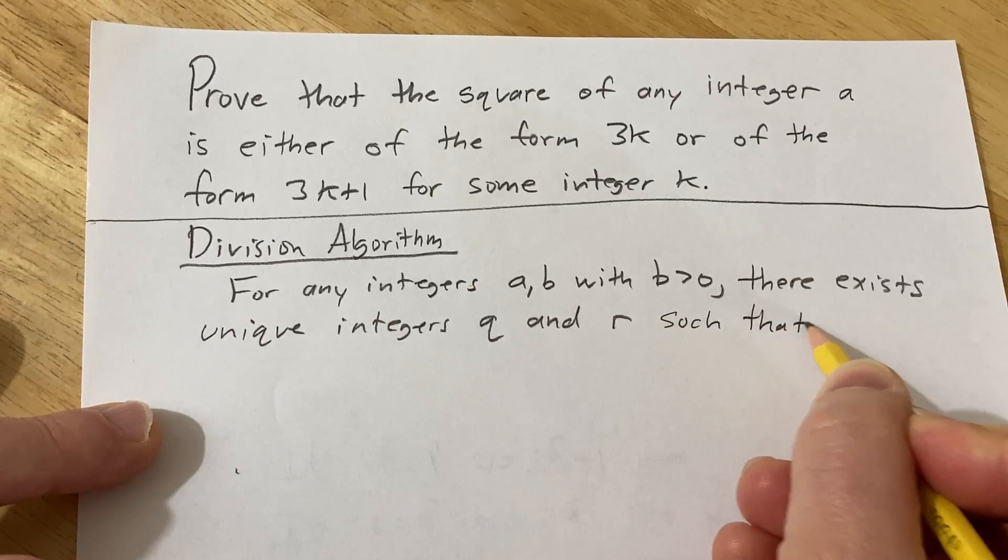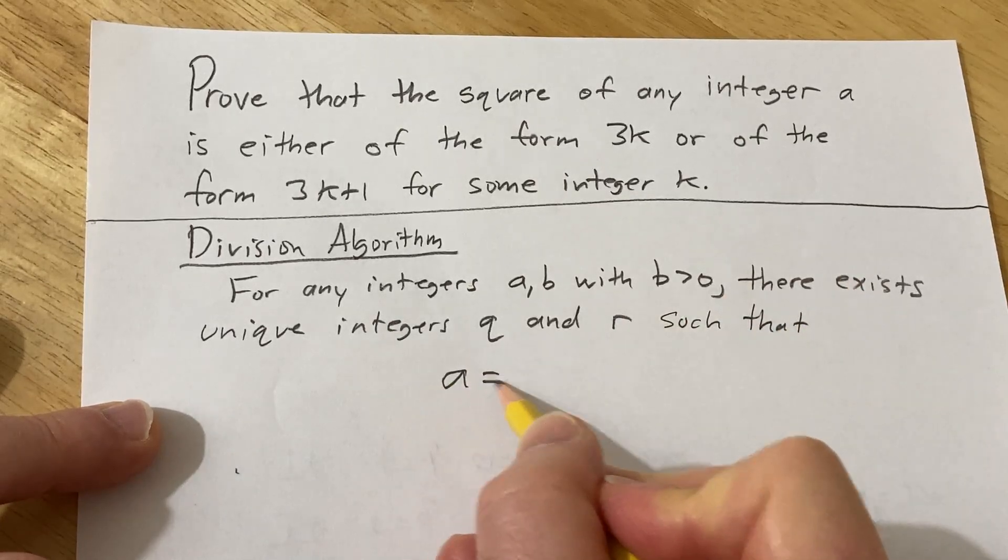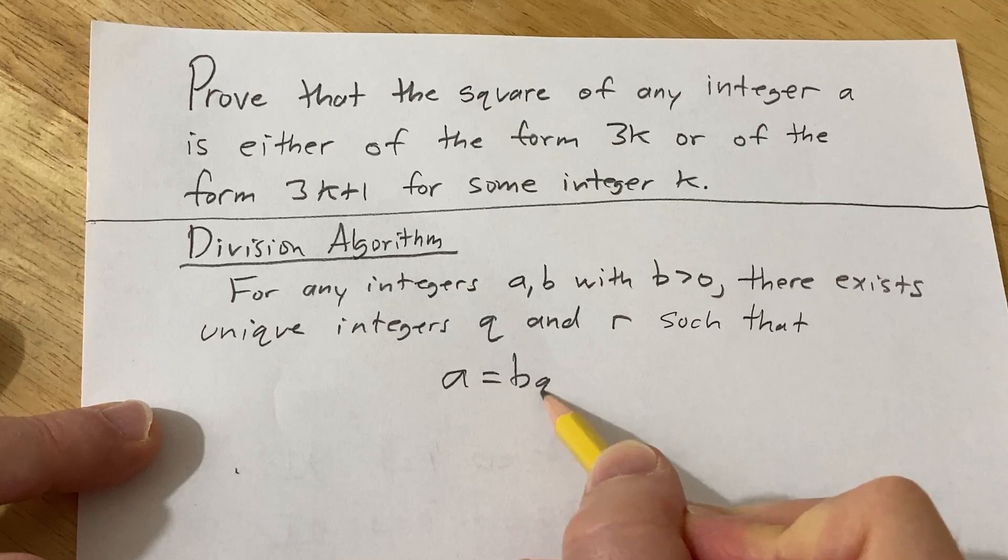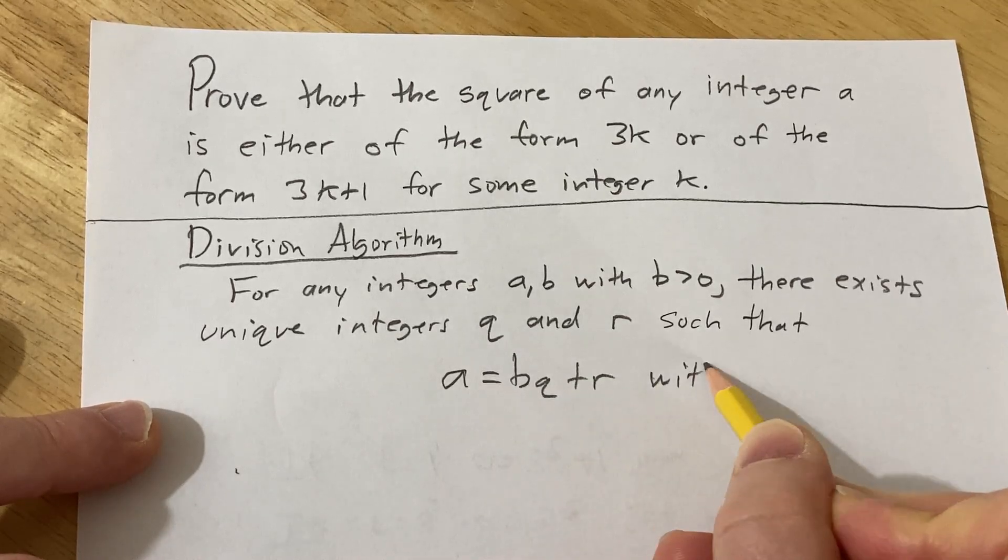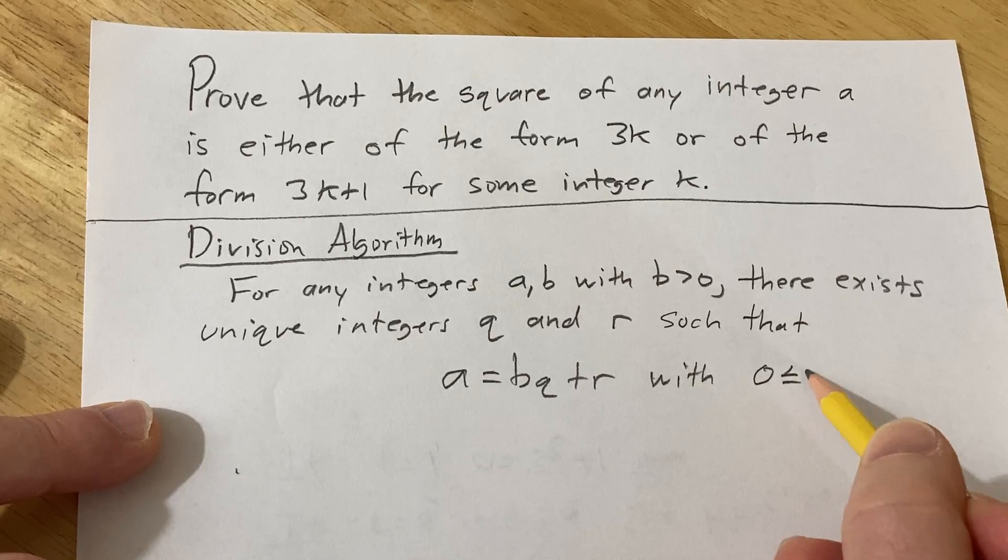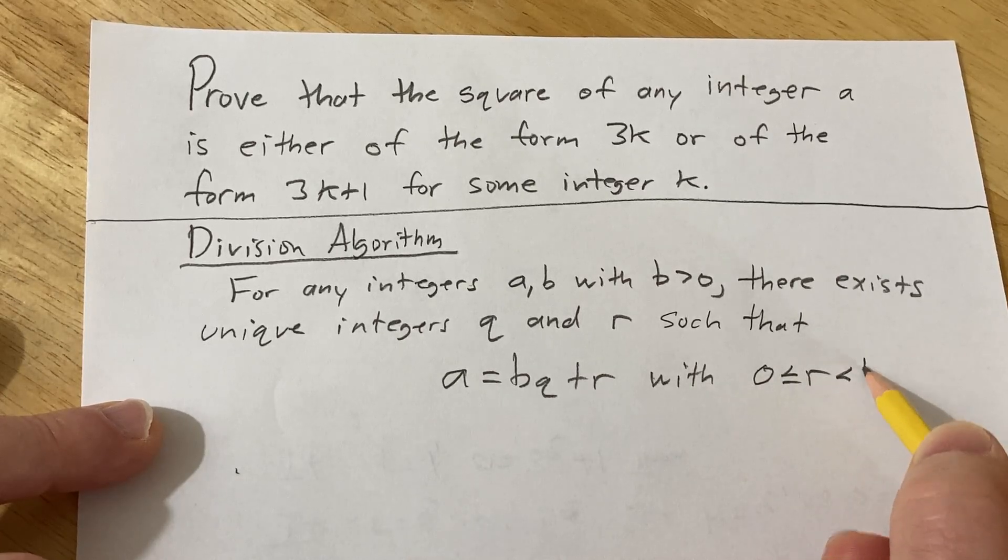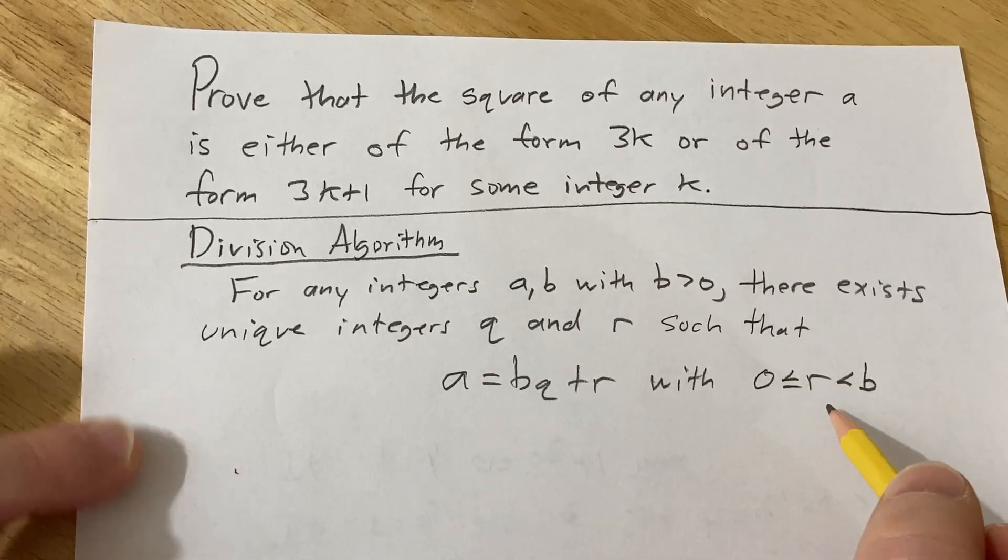such that we can write a equal to bq plus r with a special condition on r. It's between 0 and b, it includes 0 but does not include b.